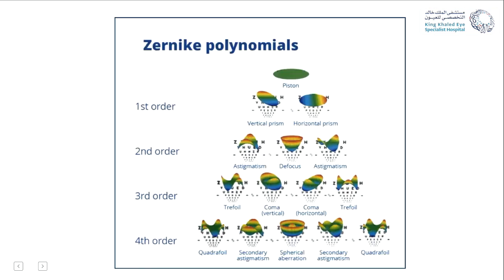These aberrations can be represented in the Zernike polynomial pyramid. The first order is insignificant and constant for everyone. The second order represents the sphero-cylindrical refractive error — astigmatism, myopia, and hyperopia. The third and fourth orders represent high order aberrations.